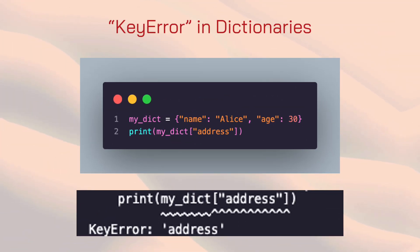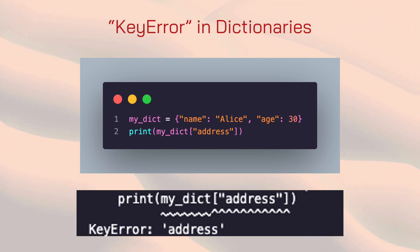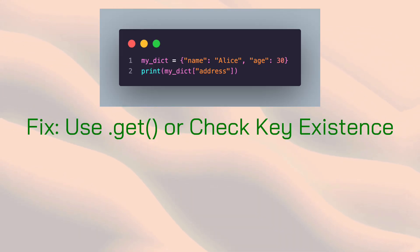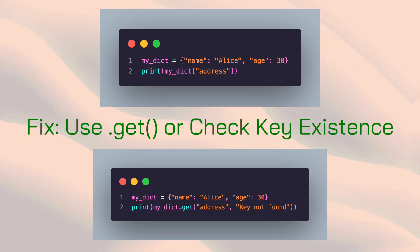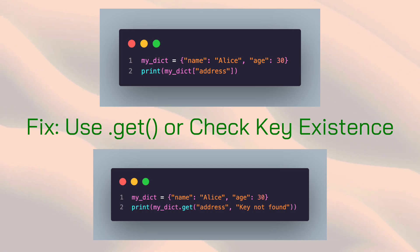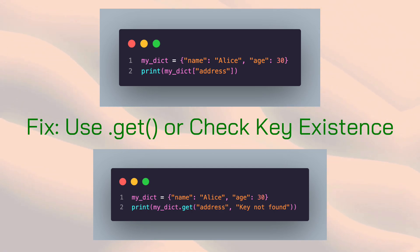Last but not least, the KeyError. This happens when you try to access a dictionary key that doesn't exist — it's one of those frustrating errors that's easy to miss. To fix a KeyError, you can use get instead of directly accessing keys. Get returns None if the key doesn't exist, avoiding the error. Or use in to confirm if the key is there first.